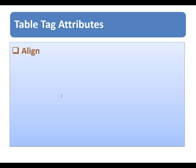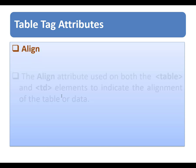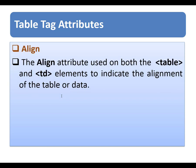The next attribute is the align attribute. You can use the align attribute on both the table and td element to indicate the alignment of the table or data.